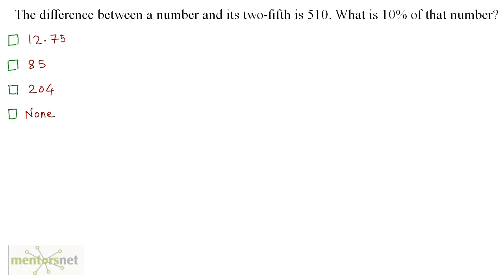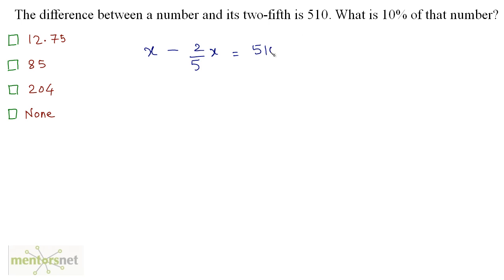The difference between a number and its two-fifths is 510. What is 10% of that number? Let this number be x. The difference between this number and its two-fifths is 510, so we have x minus two-fifths of x, that is x minus 2 by 5 times x, is equal to 510.